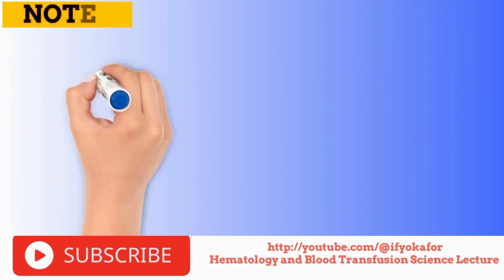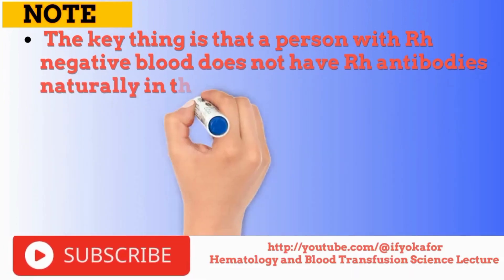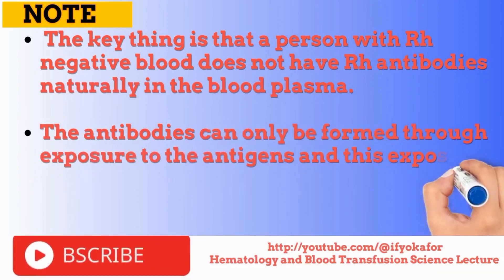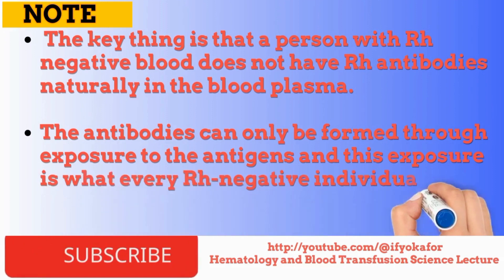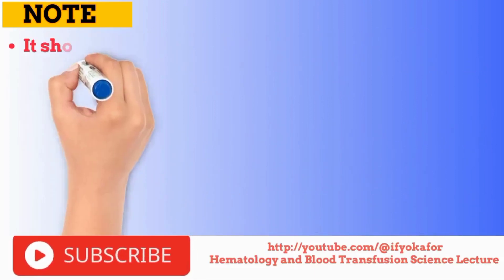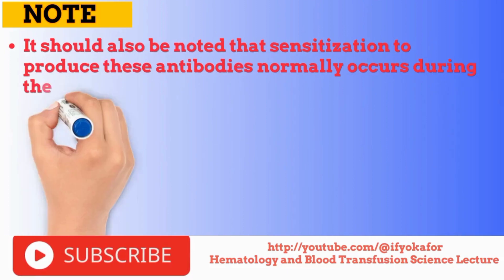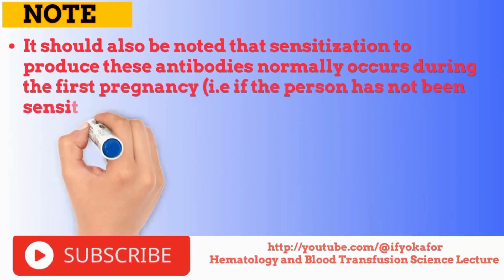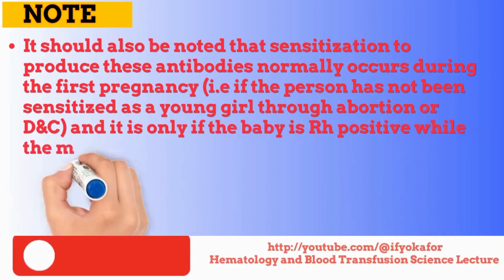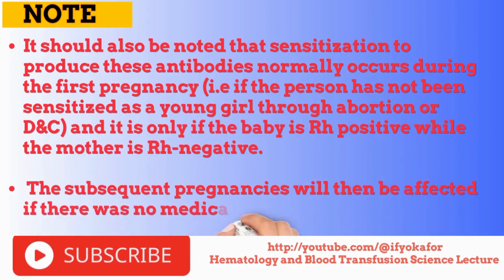Note, the key thing is that a person with ROH negative blood does not have ROH antibodies naturally in the plasma. The antibodies can only be formed through exposure to the antigens, and this exposure is what every ROH negative individual, especially young girls and women of childbearing age, must prevent at all times. Sensitization to produce these antibodies normally occurs during the first pregnancy, if the person has not been sensitized as a young girl through abortion or during pregnancy, and only if the baby is ROH positive while the mother is ROH negative. The subsequent pregnancies will then be affected if there was no medical intervention.